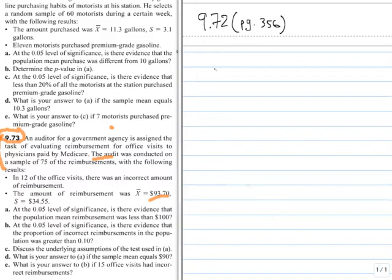The next part of the problem, Part B, gives us some additional information. Alpha is still 0.05, my sample size is still 75. At the 0.05 level of significance, is there evidence that the proportion of incorrect reimbursements in the population was greater than 0.1? So now we're looking at proportions in the population.